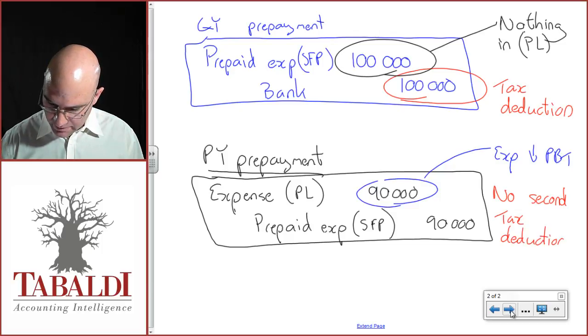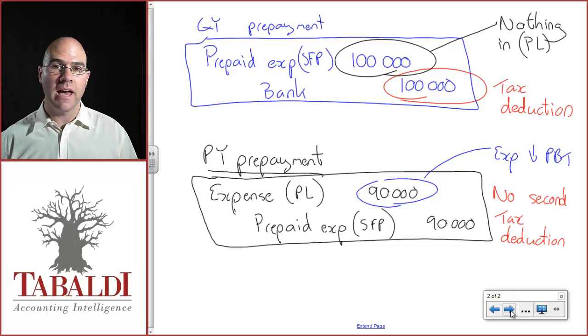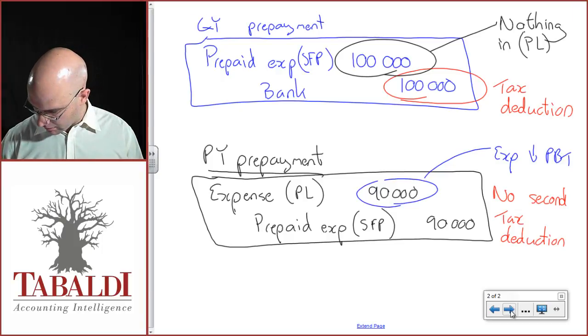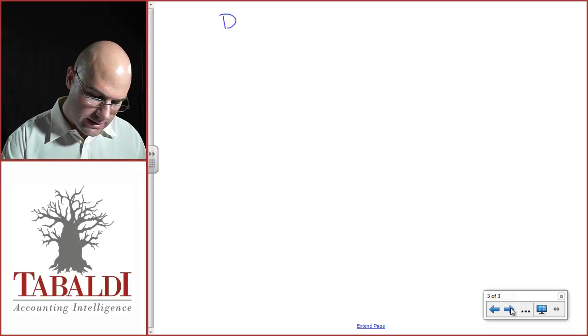So here I've got a temporary difference that's going to result in deferred tax because the tax deduction and the accounting deduction are just in different periods. So what do I need to do? Let's change this around a little bit and have a look at the deferred tax balance calculation first.